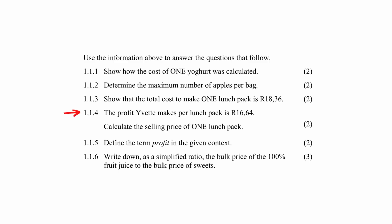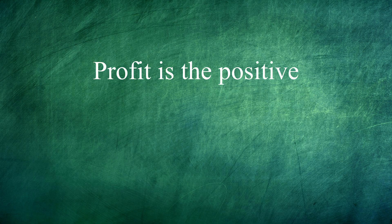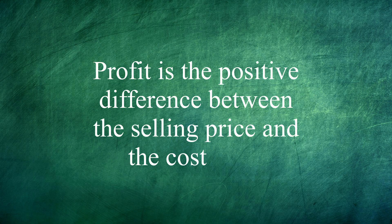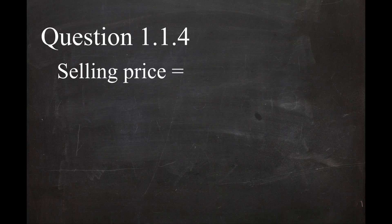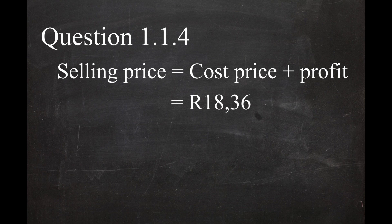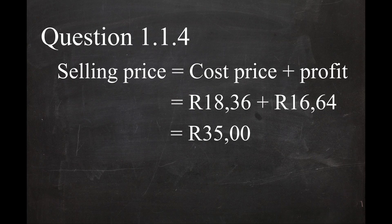In question 1.1.4, you have to calculate the selling price of one lunch pack if the profit per lunch pack is 16.64. The profit is the positive difference between the selling price and the cost price. So the selling price equals the cost price plus the profit. The selling price for one lunch pack is 18.36 plus 16.64, and this equals 35.00 per lunch pack.